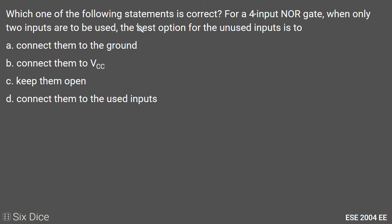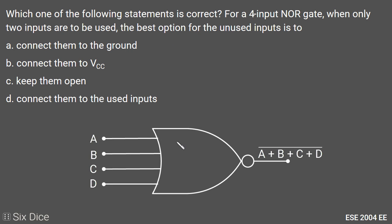The question asks which statement is correct for a 4-input NOR gate when only 2 inputs are to be used. This is a 4-input NOR gate with inputs A, B, C, and D, so the output is the complement of A plus B plus C plus D. Since we only need to use two inputs, we will go through all four options one by one to find the best answer.